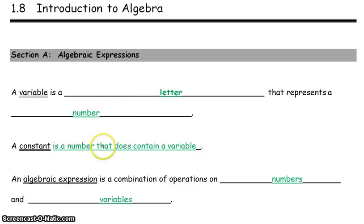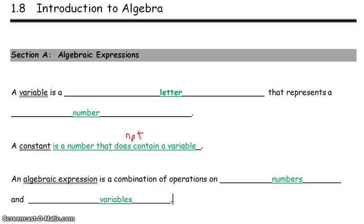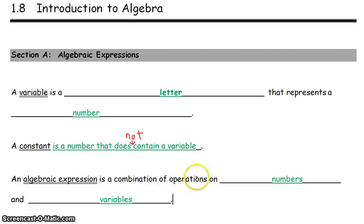A constant is a number that does not contain a variable. An algebraic expression is a combination of operations on numbers and variables.